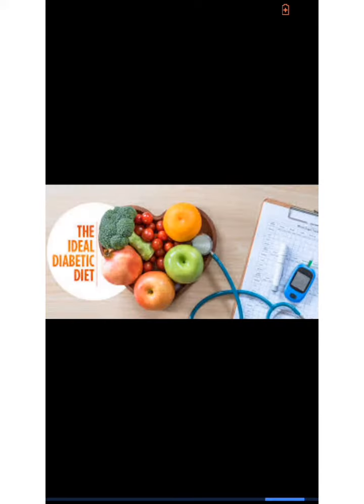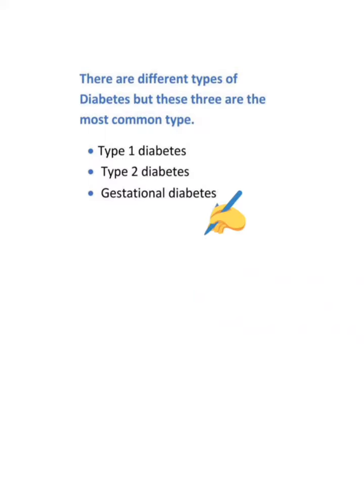And when that occurs over a period of time, we are then diagnosed with diabetes. There are different types of diabetes, but these three are the most common.